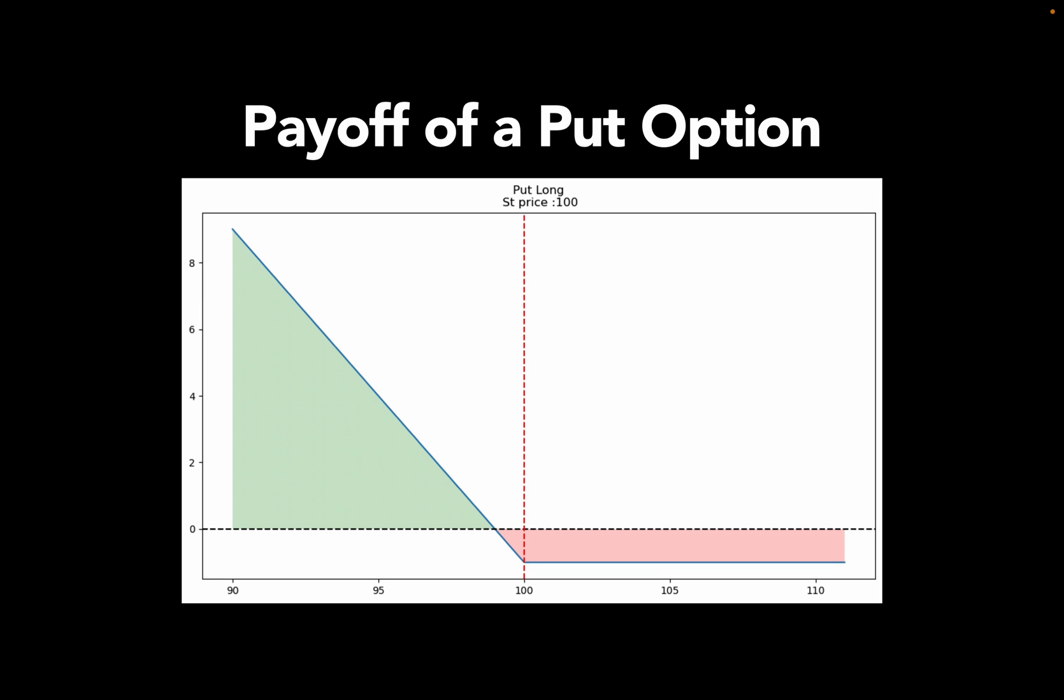Let's take a look at the payoff of a put option. What you see on the horizontal or x-axis is a range of prices for the underline, so the stock. The assumption is the same as before, the strike price is 100 US dollar.